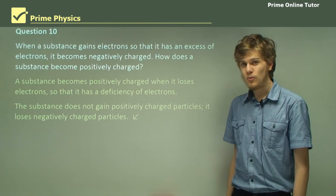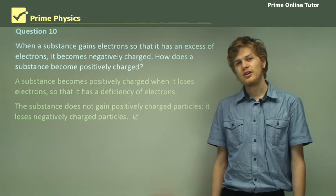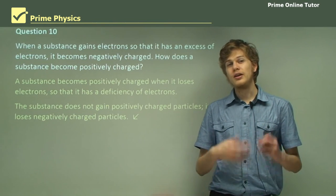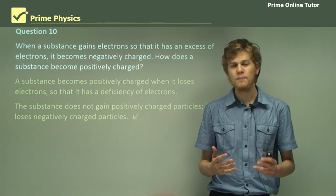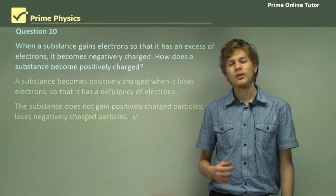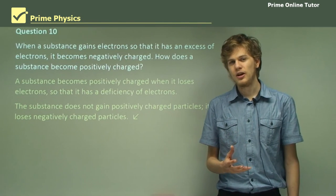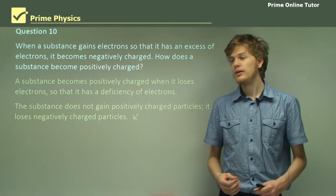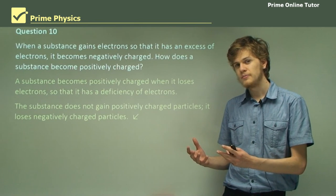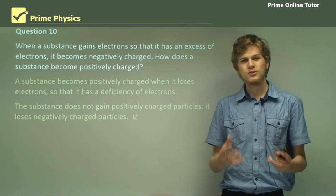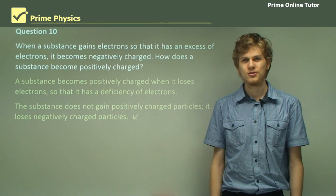That's the end of the questions. In this section, we've learned about the history of electricity, in particular static electricity, and we've looked at what can cause electric charge. Negative electric charges are caused by an excess of electrons, and positive electric charges are caused by a deficiency of electrons.